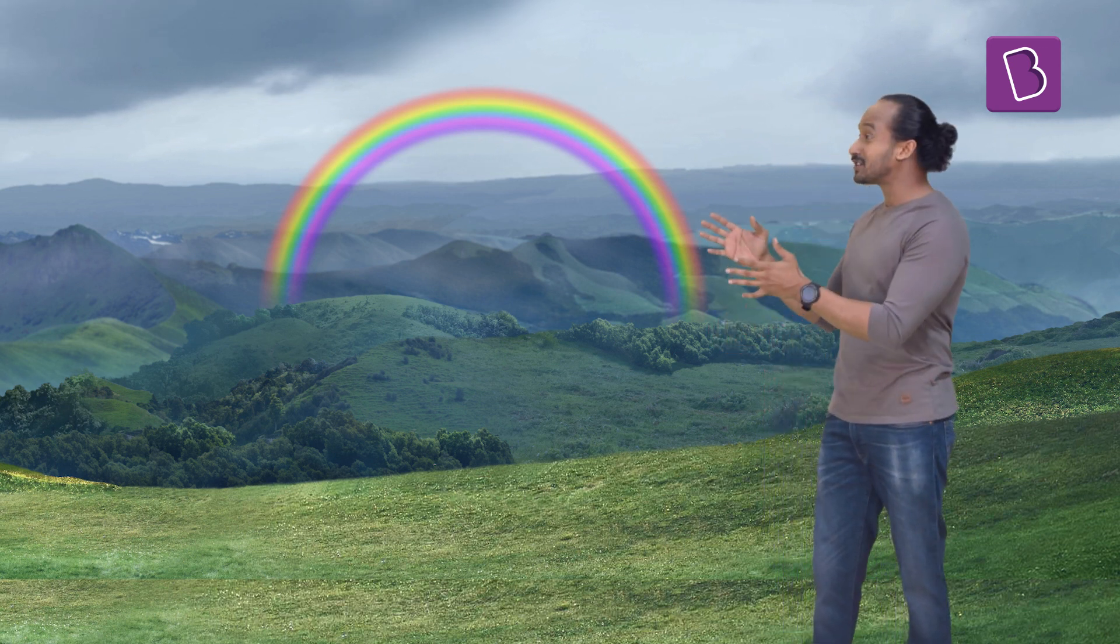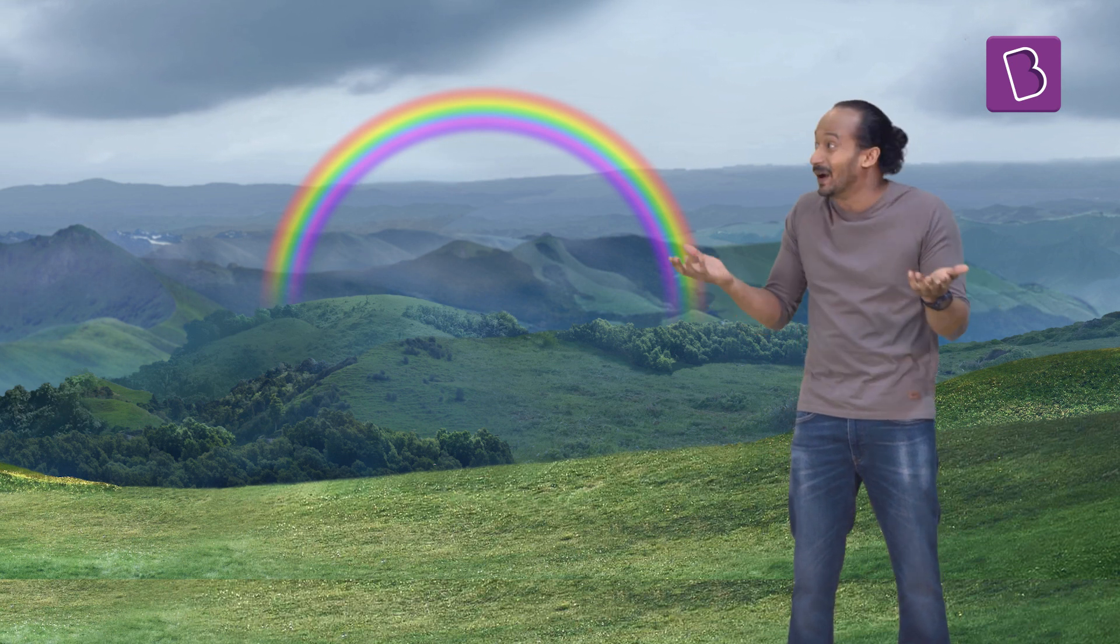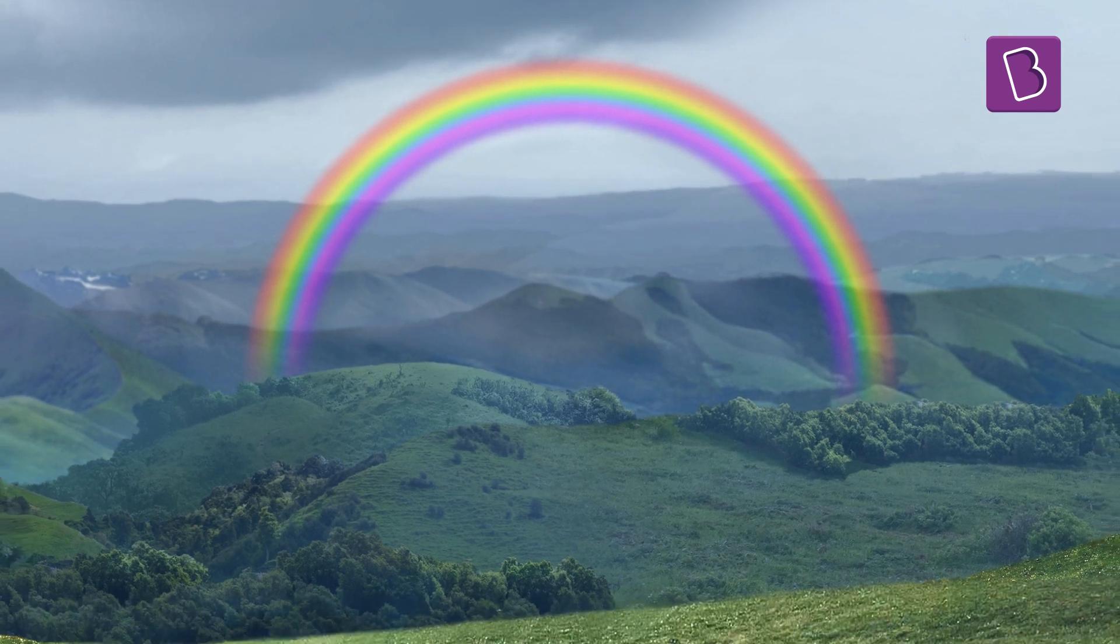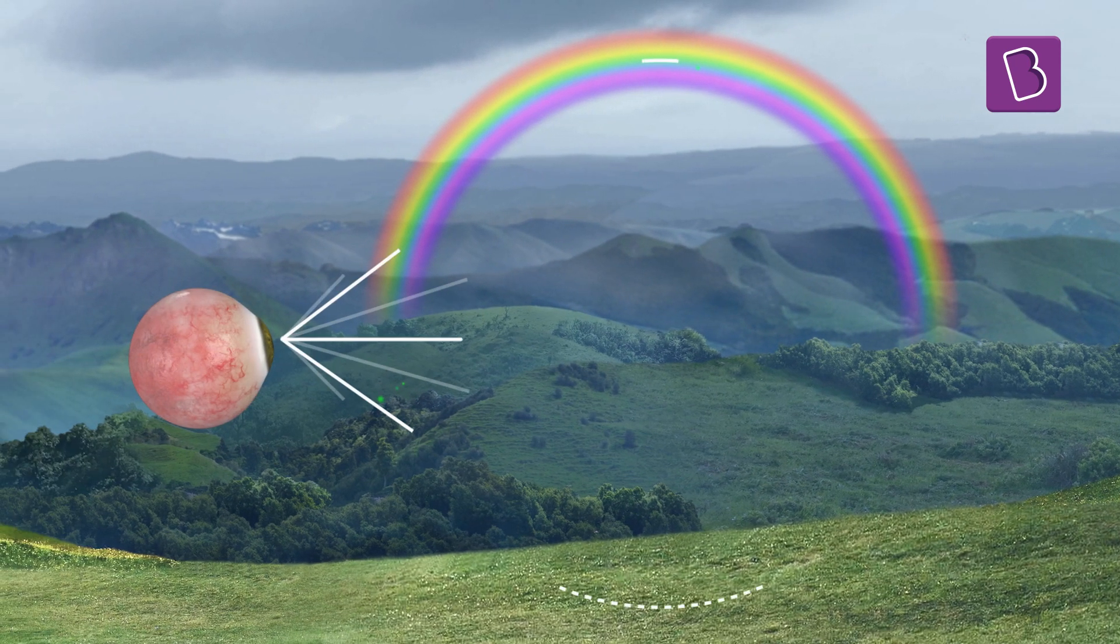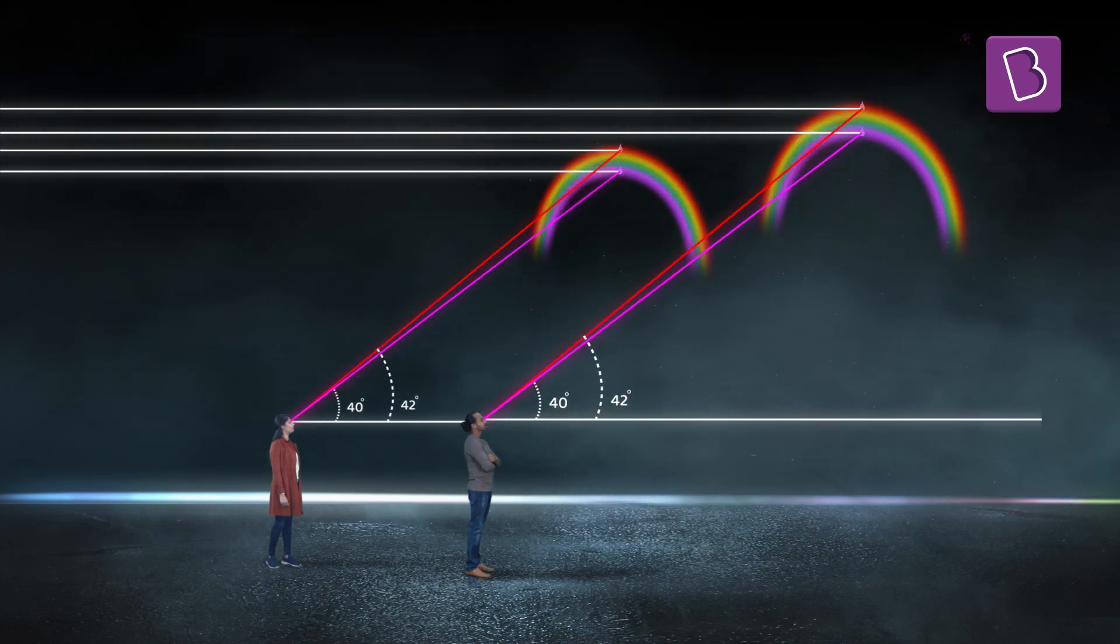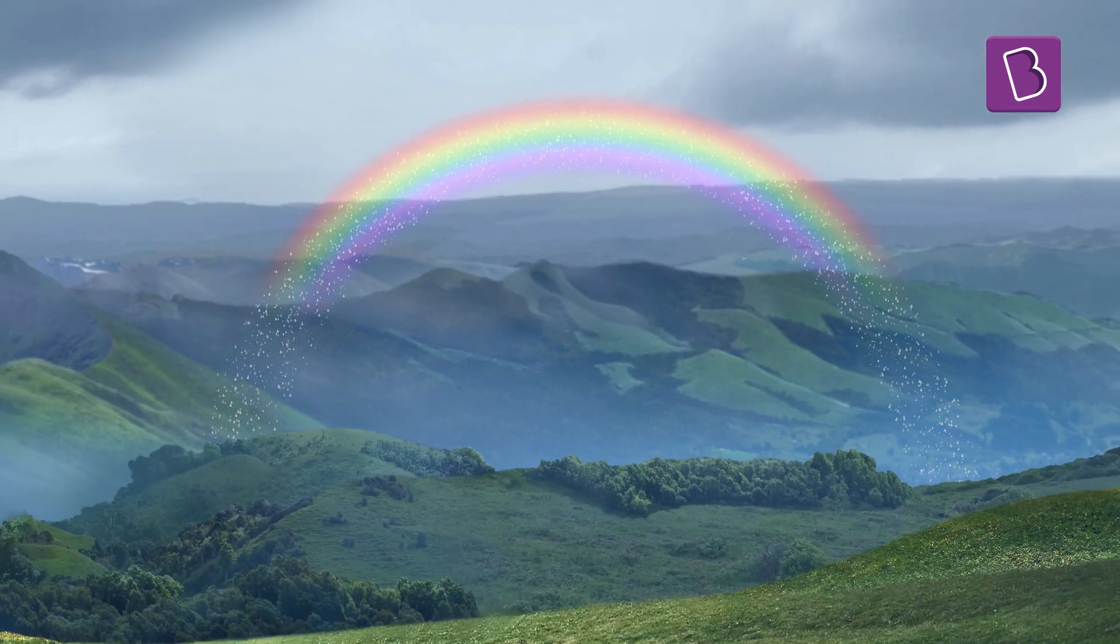Hey, now you know not only do rainbows not have an end since they are circles, they actually in a sense don't even exist. They are optical marvels that form when sunlight, atmospheric conditions, and the viewer's position are just right. In fact, someone standing next to you will be seeing a rainbow formed by other water droplets. They are looking at a rainbow, but it's not the same one you're seeing. So don't be sad that you can't get to the end of a rainbow, because every rainbow you see is a special rainbow made just for you.